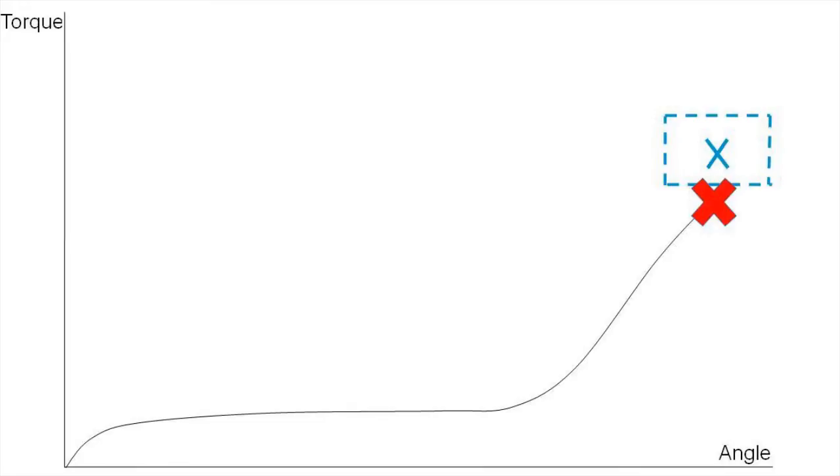In this first example, the tool shuts off based on the target angle, but a low torque creates a not okay result. In the second example, we'll now see an okay torque and a low angle, again providing a not okay result.